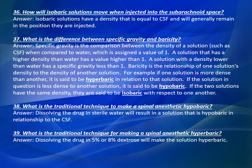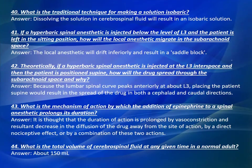Question Number 38: What is the traditional technique to make a spinal anesthetic hypobaric? Answer: Dissolving the drug in sterile water will result in a solution that is hypobaric in relationship to the CSF. Question Number 39: What is the traditional technique for making a spinal anesthetic hyperbaric? Answer: Dissolving the drug in 5% or 8% dextrose will make the solution hyperbaric. Question Number 40: What is the traditional technique for making a solution isobaric? Answer: Dissolving the solution in cerebrospinal fluid will result in an isobaric solution.